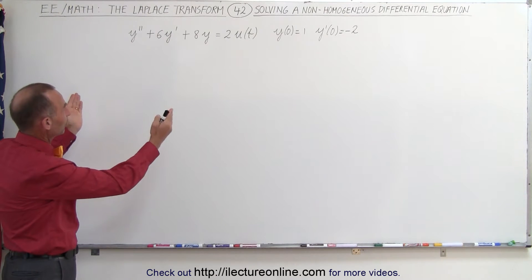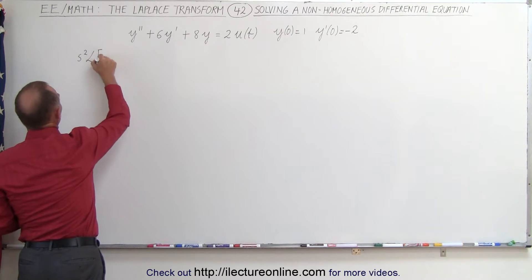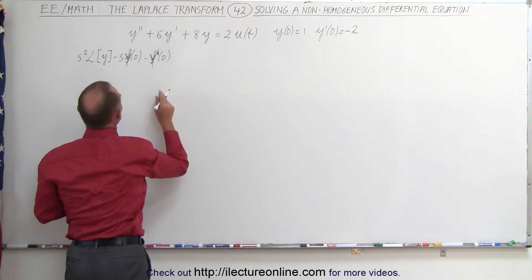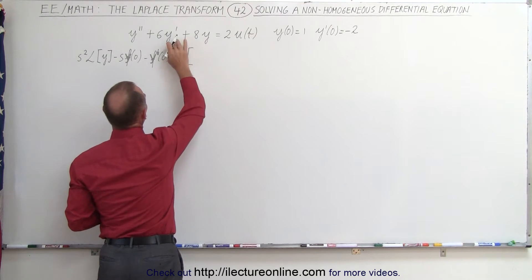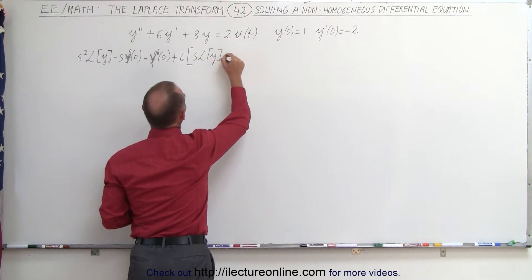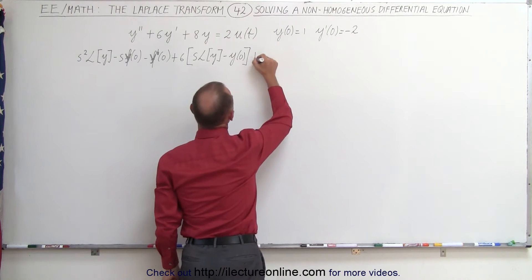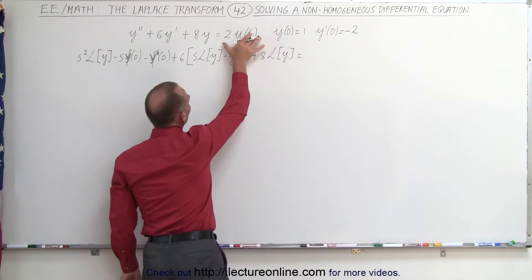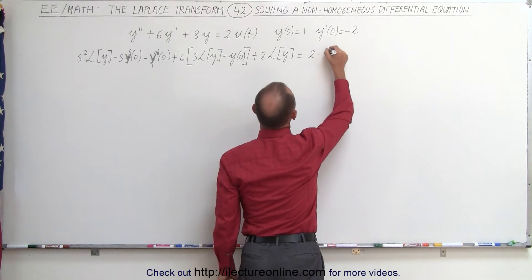The way you solve this is by taking the Laplace transform of both sides of the equation. On the left side we get s squared times the Laplace transform of y, minus s times the function evaluated at zero, minus the first derivative of the function evaluated at zero. This gives us the Laplace transform of y double prime, plus six times the Laplace transform of y prime, which is s times the Laplace transform of y minus the function evaluated at zero — multiplied by the coefficient six — plus eight times the Laplace transform of y. This equals the Laplace transform of the right side, which is two times the Laplace transform of the unit step function, equal to two times one over s.